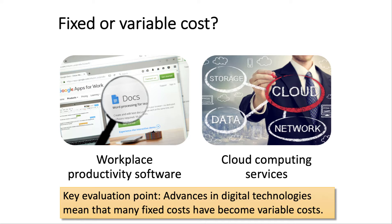An evaluation point: the big advances in digital technologies mean that many costs traditionally treated as fixed in the textbooks are now really variable costs. For example, workplace productivity software or cloud computing services such as Dropbox — if those services are on a per capita basis, in other words based on how many people work for the business, then those costs effectively become variable costs. It's an interesting evaluation point.